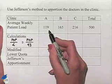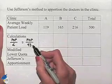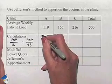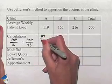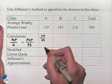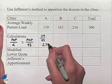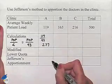We're going to take each of the populations and divide by 43. That would be 119 divided by 43, which would give us a value of 2.77 rounded to the nearest hundredth.